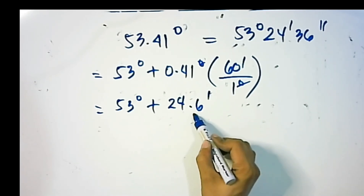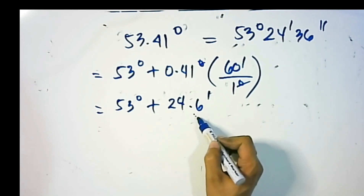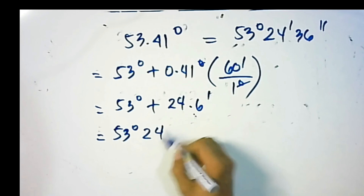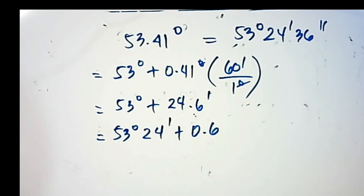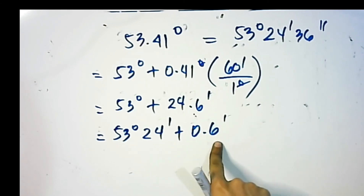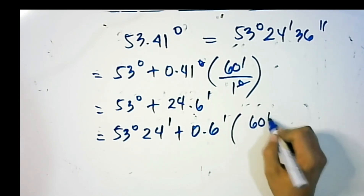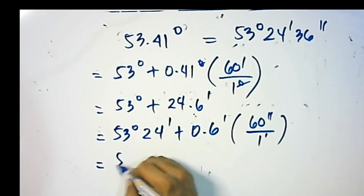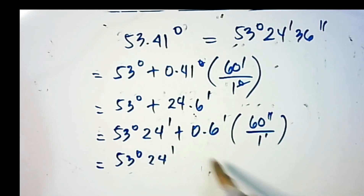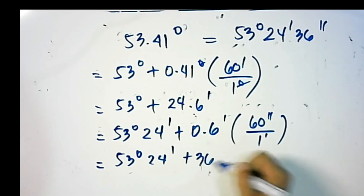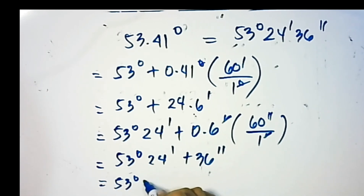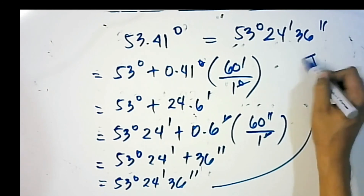We work only with the decimal portion of the minutes to convert it into seconds. So we have 53 degrees, 24 minutes, plus 0.6 minutes multiplied by 60 seconds over 1 minute. Cancel the minutes: 0.6 times 60 equals 36 seconds. The final answer is 53 degrees, 24 minutes, and 36 seconds — we obtained the same answer, confirming our conversion is correct.